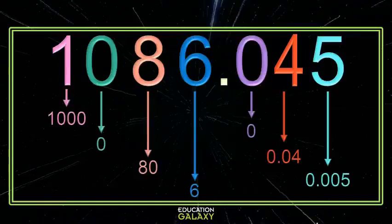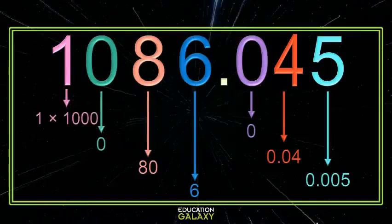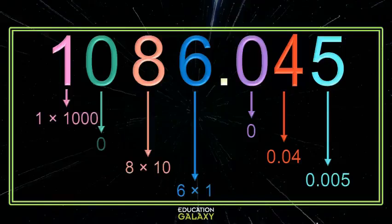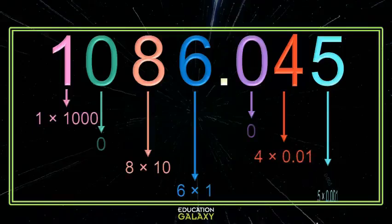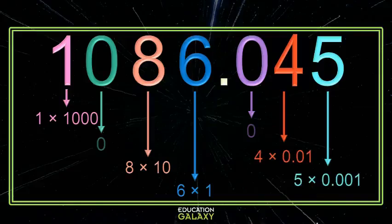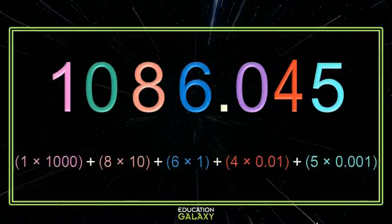So now we have our place values. We know that the 1,000 is just 1,000; the 0 we won't worry about; the 8 is 8 tens; the 6 is 6 ones; the 0 we don't worry about; the 4 in the hundredths place is 4 hundredths; and the 5 in the thousandths place is 5 thousandths. Now we just write this as a sum — and there's your number, all expanded. It's beautiful.